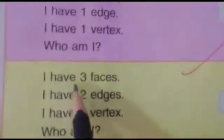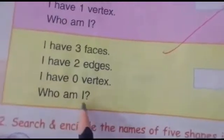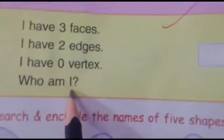Okay, now next one. I have three faces, I have two edges, I have zero vertex. Who am I? Now tell me the name of the shape which has three faces, two edges, and zero vertex. Kaun hoon mein? Ye kya hai? What is this? Which shape is this? Cylinder!